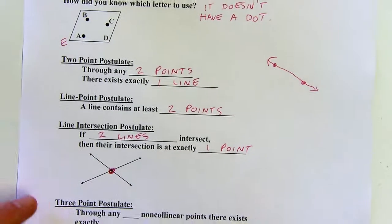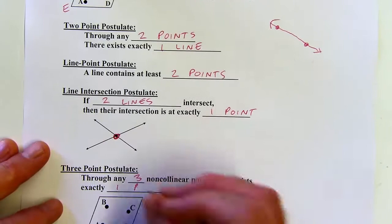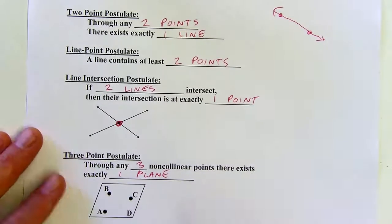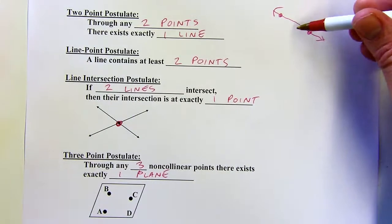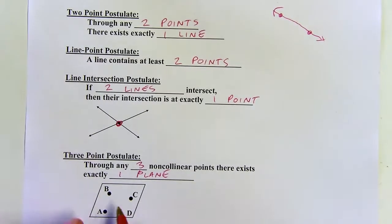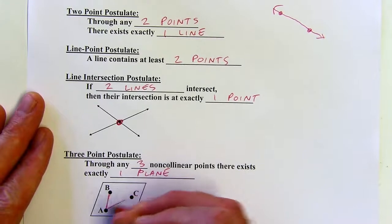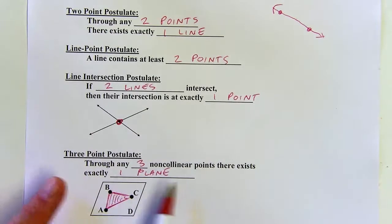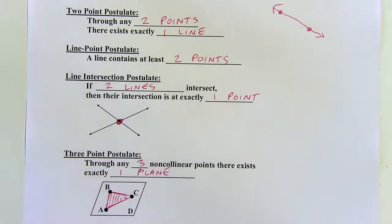The three-point postulate: through any three non-collinear points, there exists exactly one plane. Two points determine a line, but three points determine a plane — and they have to be non-collinear. If you put a third point on a line, that wouldn't determine a plane. If you can draw a triangle using the three points, that's a little patch of the plane. The plane goes on infinitely in all directions, but it's determined by that little triangle.